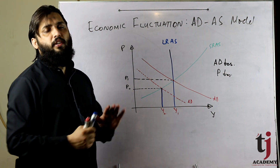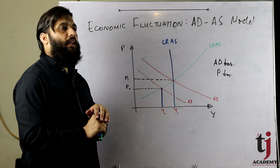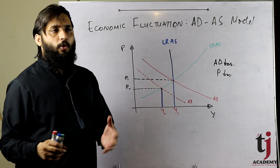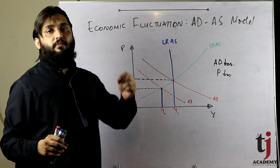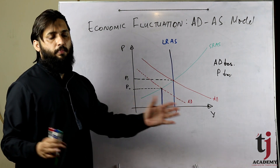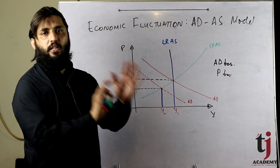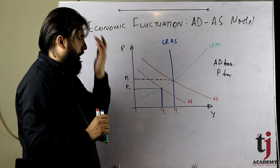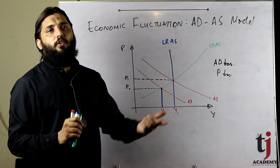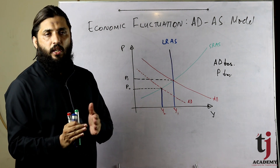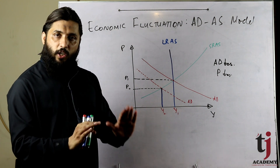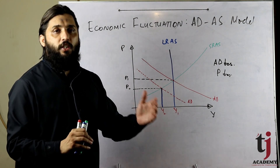Classicals argue that wage prices are flexible. The market — labor market or goods and services market — operates through the invisible hand, which is the market mechanism. Worker prices adjust and the market reaches equilibrium. However, the counter-argument is that wages and prices are not flexible; they are sticky and slow to change.